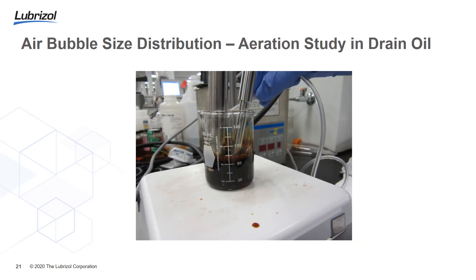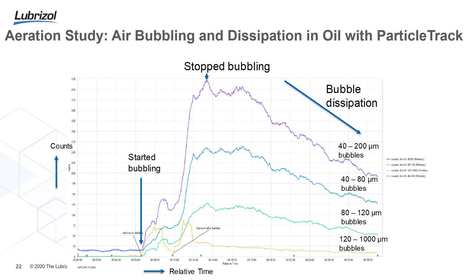In the last example, we investigate how ParticleTrack and ParticleView can characterize air bubbles in contaminated oil with particles. In a hydraulic system, trapped air — called aeration — needs to be quickly released; otherwise it can harm hydraulic efficiency. We introduced air into contaminated oil and after stopping bubbling, monitored size distribution and bubble dissipation with ParticleTrack under continuous stirring. Count numbers from bubbles in different size regimes between 40 and 200 micrometers were tracked, allowing study of both size distribution and bubble dissipation rate in different size regimes simultaneously.